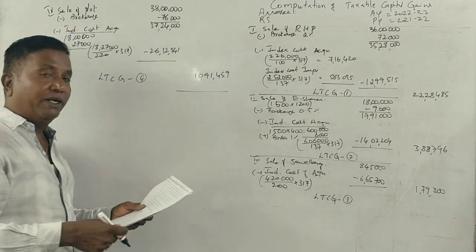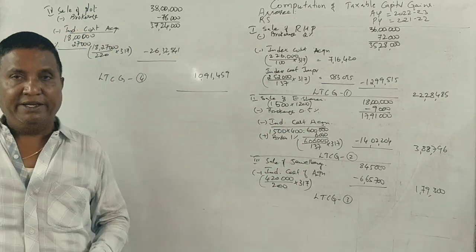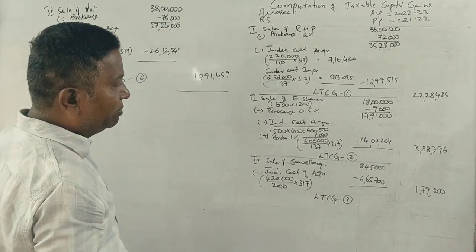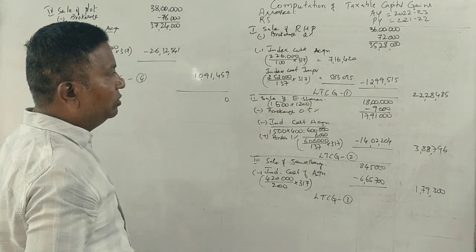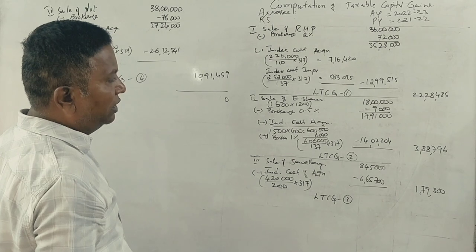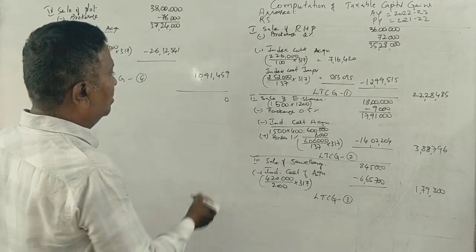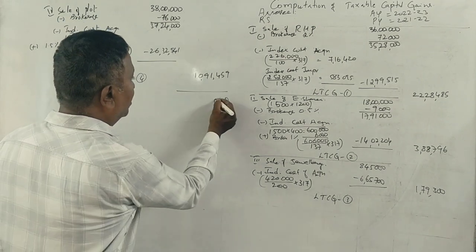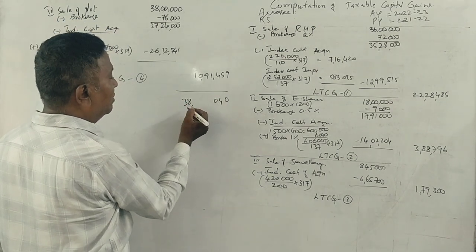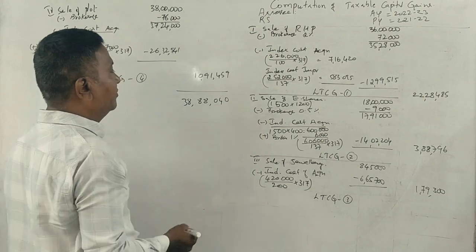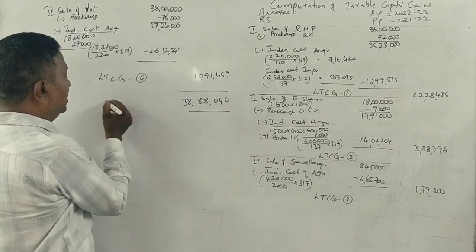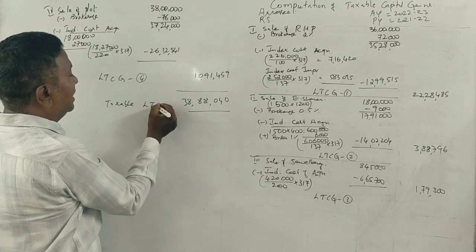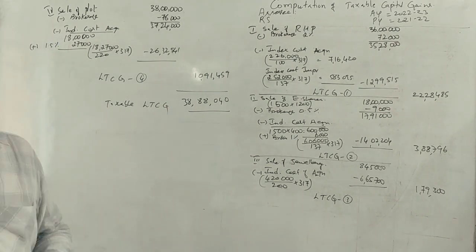All four long term capital gains together total 38,08,040. This is the taxable long term capital gain.